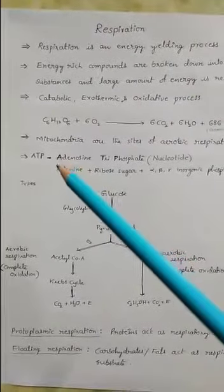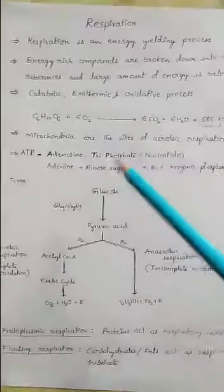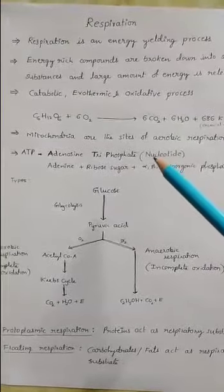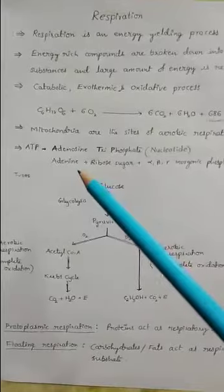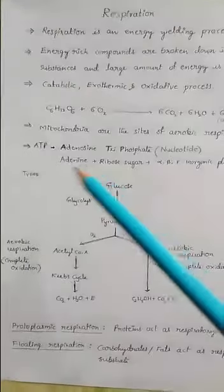And the energy is stored in the form of ATP. ATP full form is adenosine triphosphate. It is one nucleotide. Nucleotide generally composed of three components: nitrogen base, sugar, phosphate.